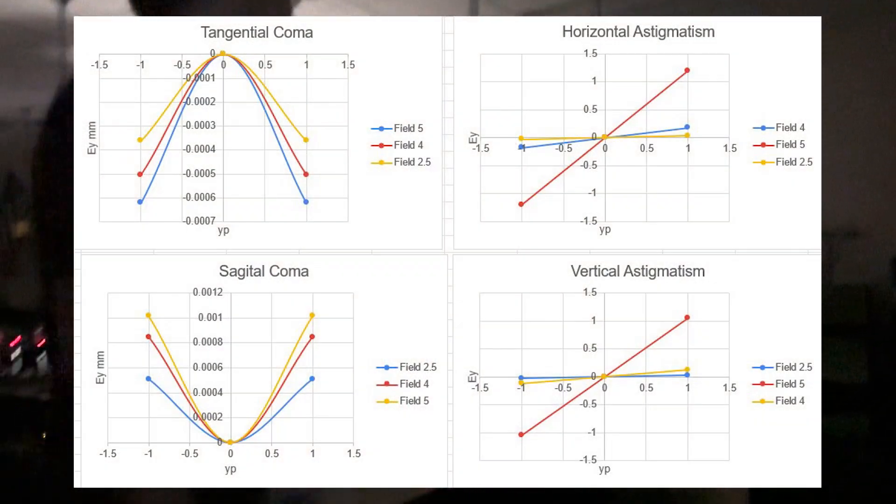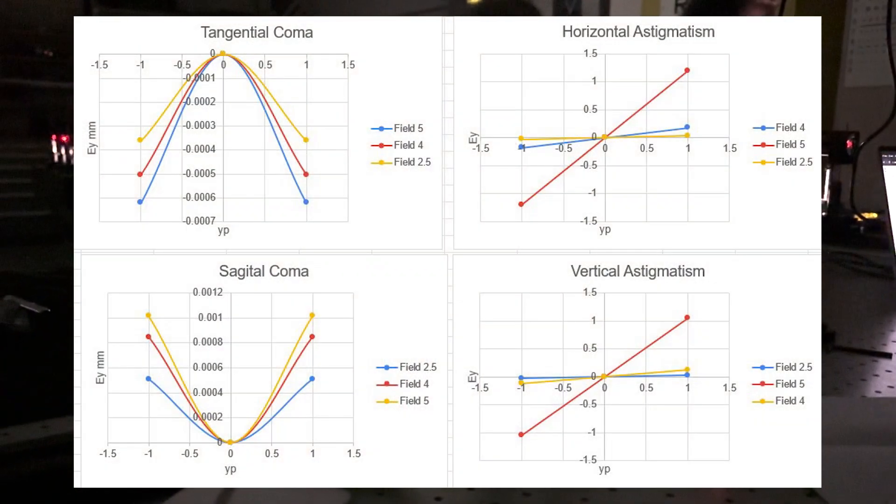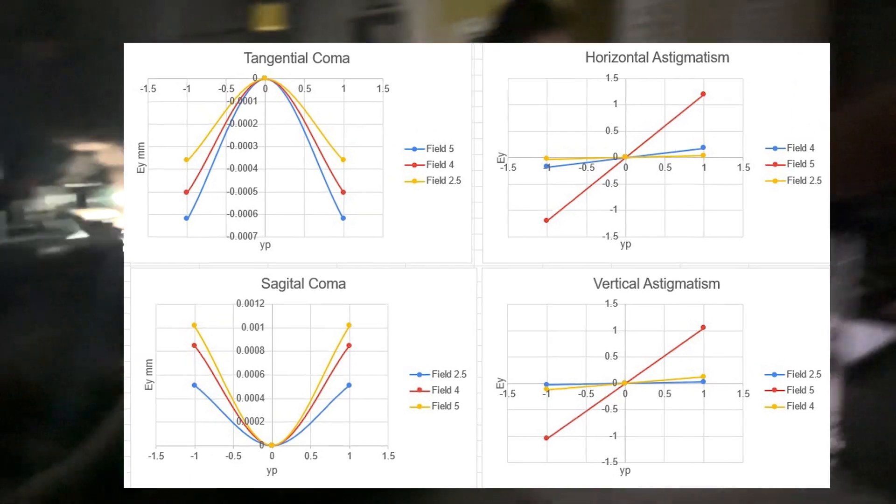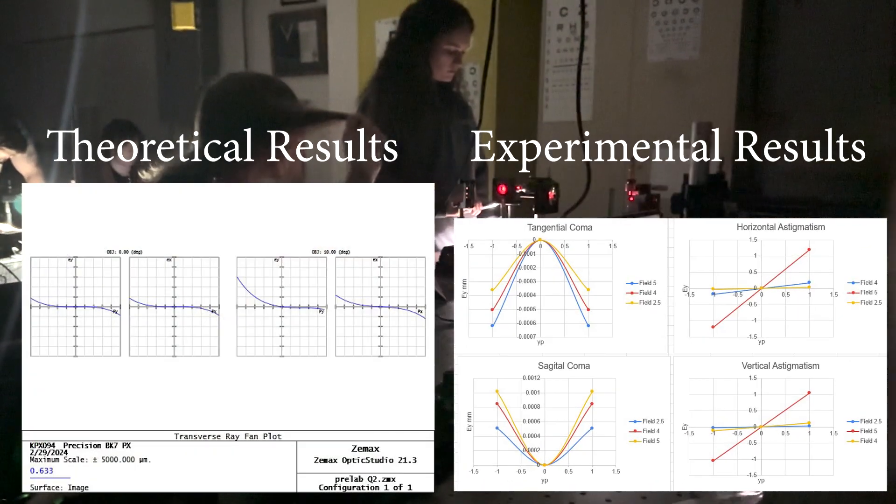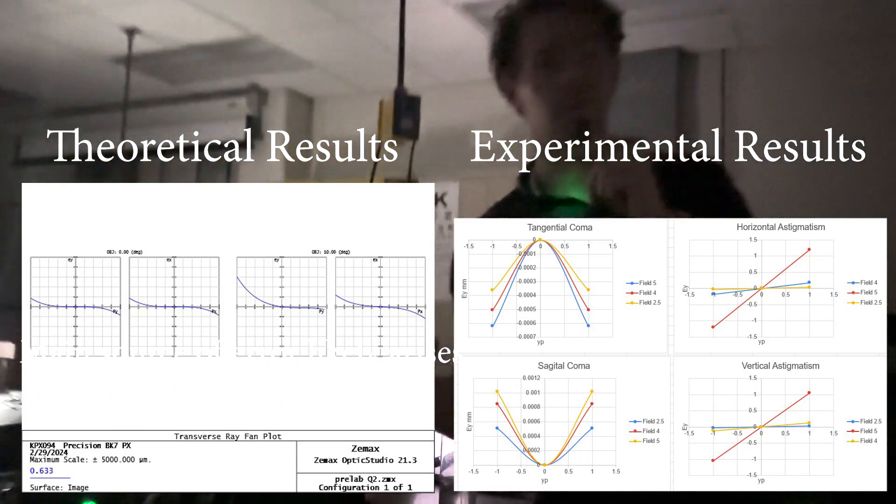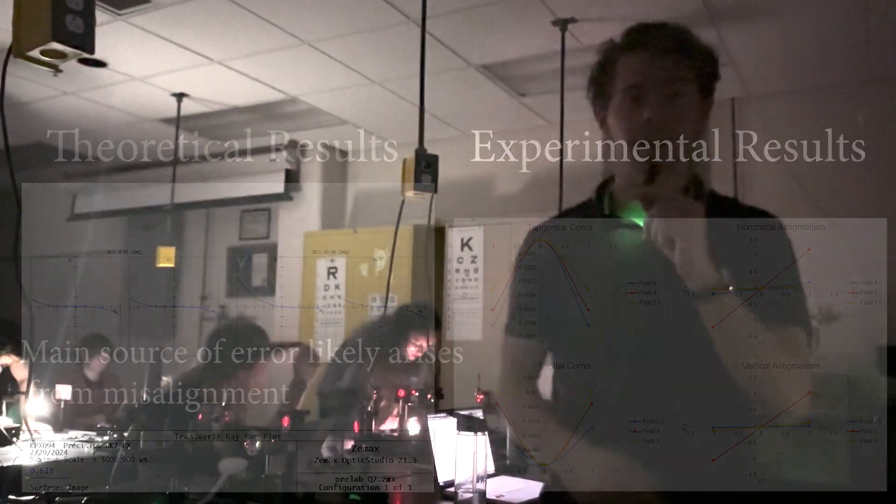We did the same thing, but for different fields. So we repeated this by adjusting the microscope to a different field position, and then adjusting the mirror so that the beam goes through the center of the hole, the chief ray goes through, lining up on the crosshairs. And then we repeat the measurements that we just explained for our chromatic and astigmatic aberration calculations. We did it for fields 5, 4, and 2.5. That's Rachel. She wants to be in the video, so we put her in there.